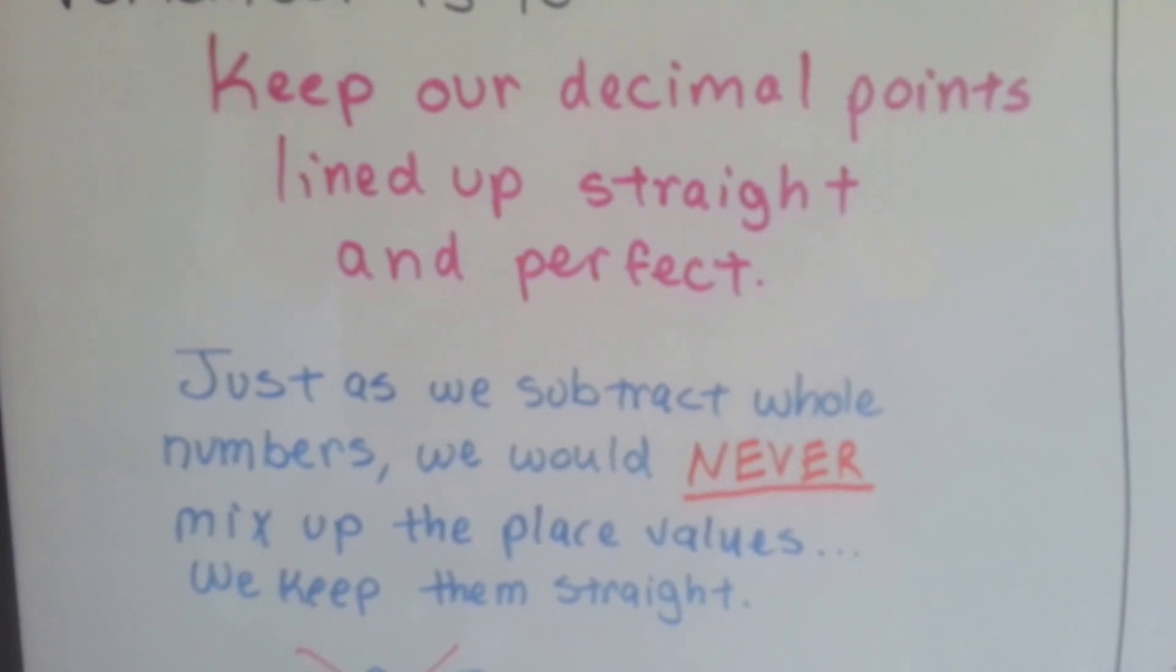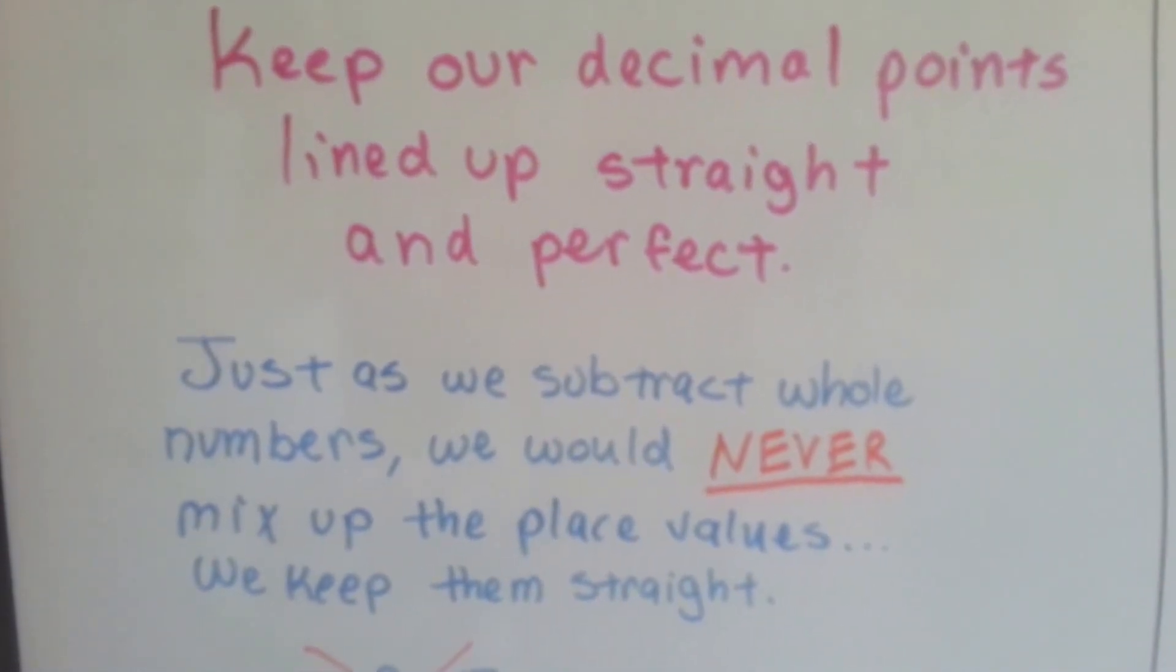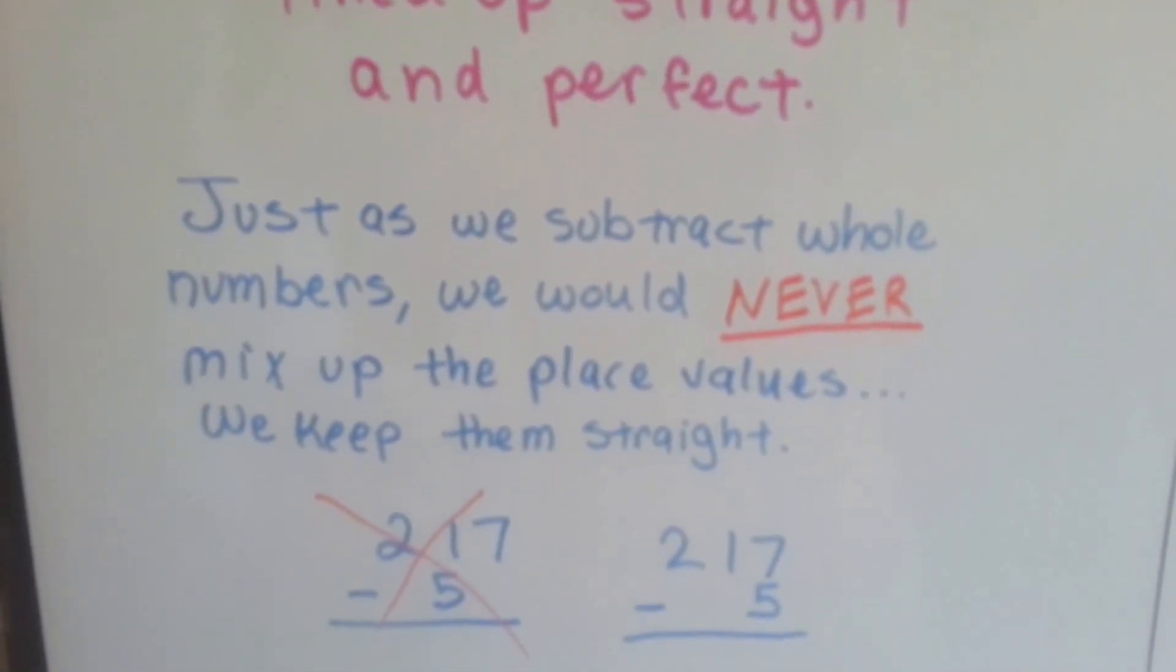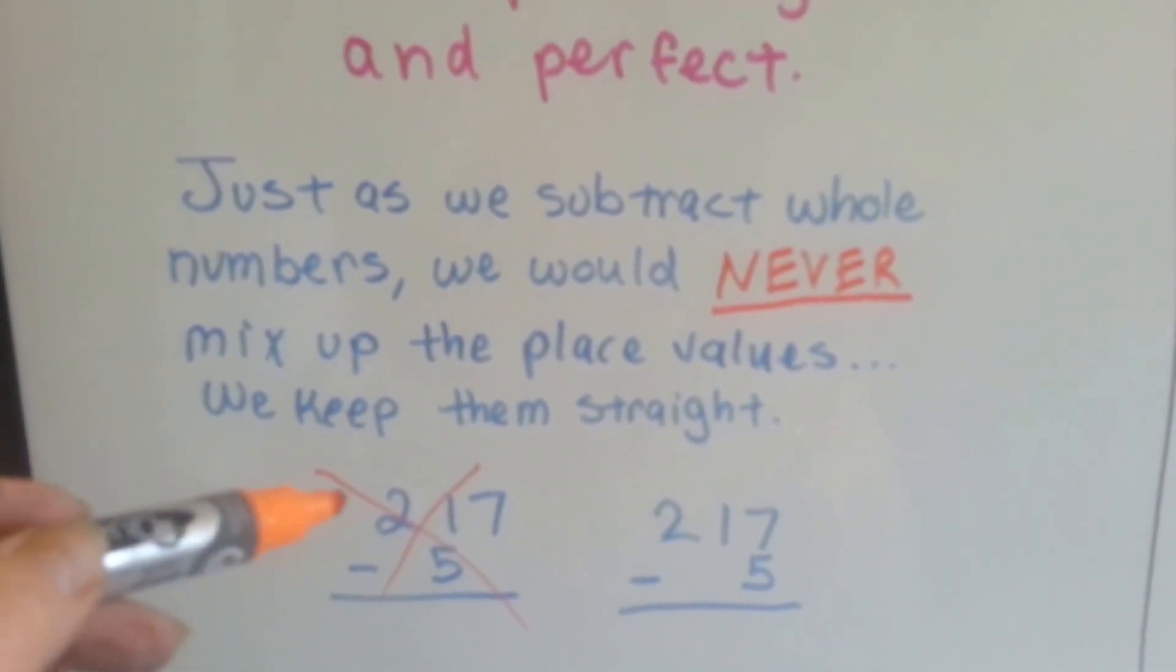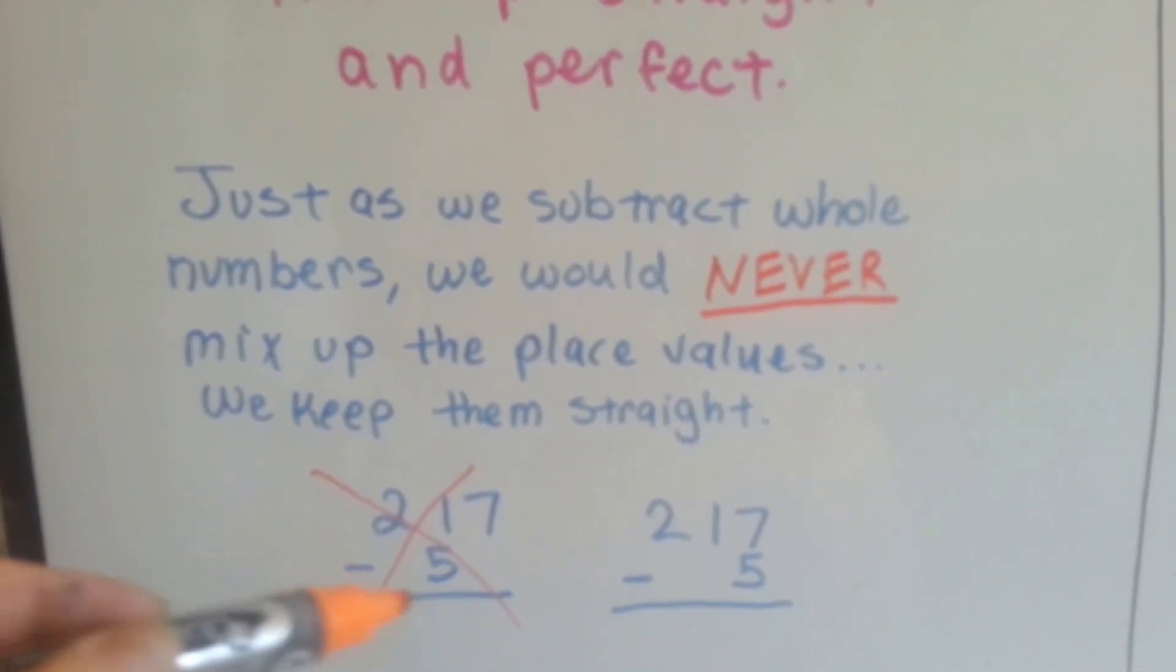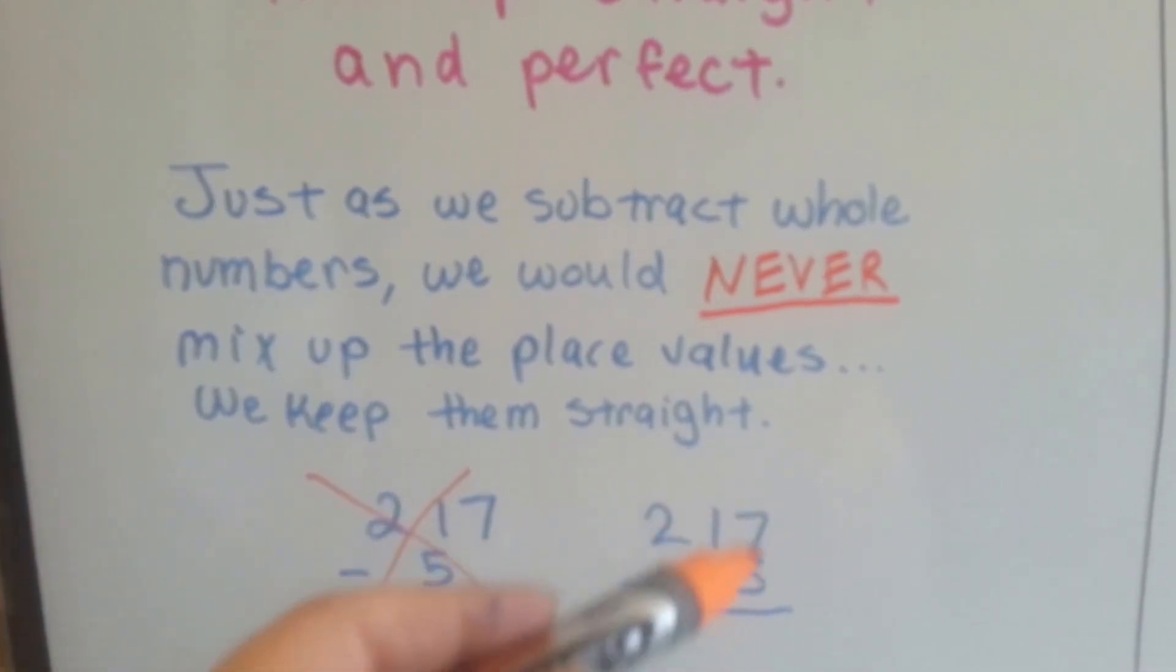Just as we subtract whole numbers, we would never mix up the place values. We keep them straight. If we had 217 and we wanted to subtract 5, we wouldn't put it in the tens place. 5 goes in the ones place.